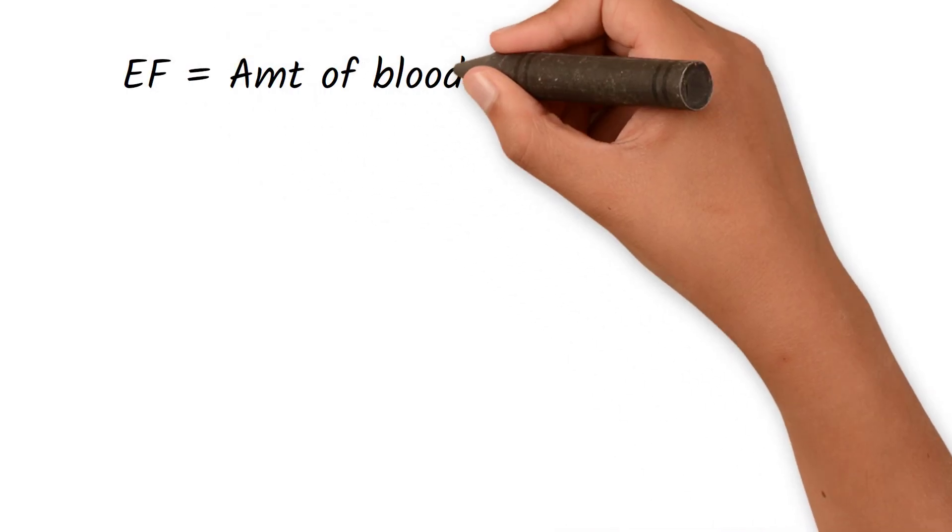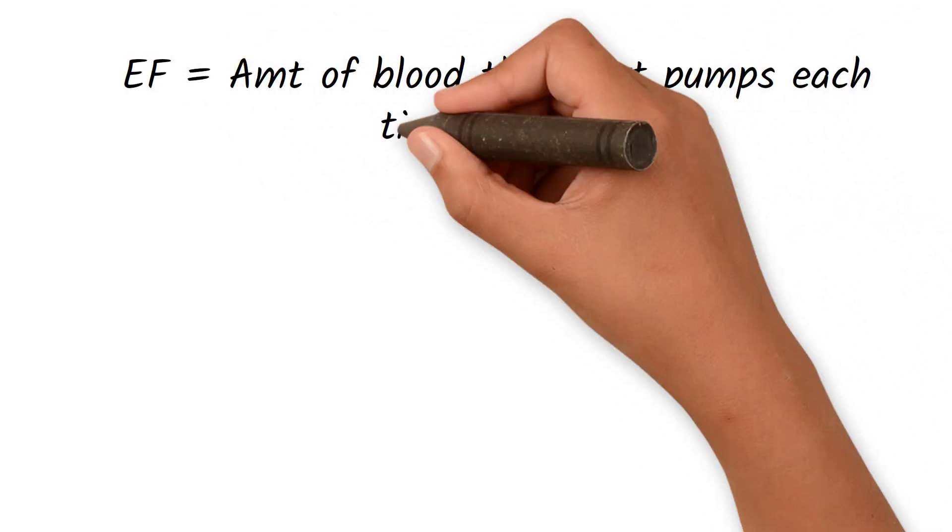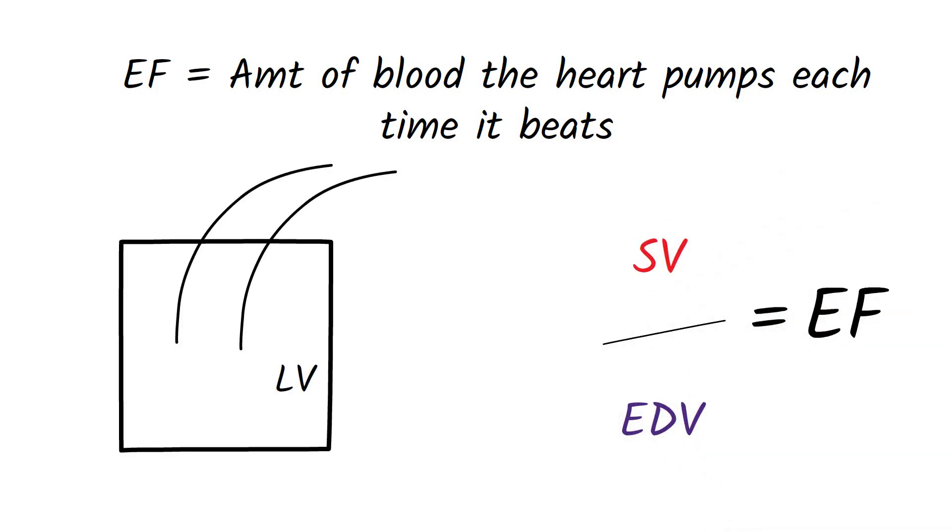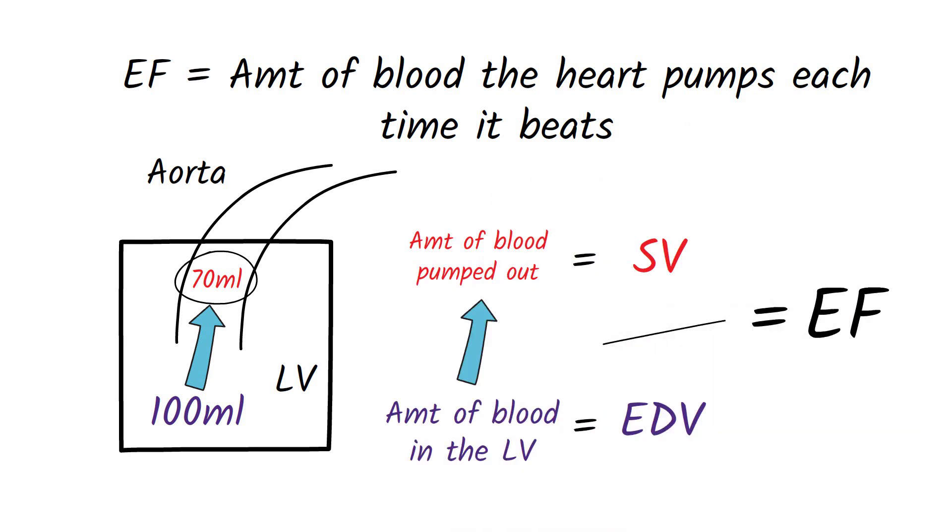Ejection fraction is a measure of the heart function. It's the amount of blood your heart pumps each time it beats. Ejection fraction is equal to stroke volume divided by end-diastolic volume. Not all blood that reaches the left ventricle will be pumped to the aorta. Stroke volume is the proportion of blood the left ventricle pumps into the aorta.